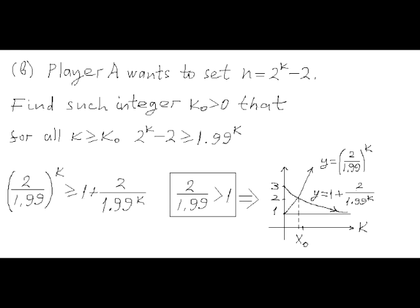To prove the second part of this problem, it suffices to set N to 2^K minus 2 for sufficiently large K. To meet the requirement specified in the conditions, we need to find a positive integer K0 such that for all integers K ≥ K0, 2^K minus 2 is greater than or equal to 1.99^K. This inequality can be transformed to another inequality involving an exponential function whose base is greater than 1. If we draw graphs of these two functions, we see that one is monotonically increasing and the other monotonically decreasing.